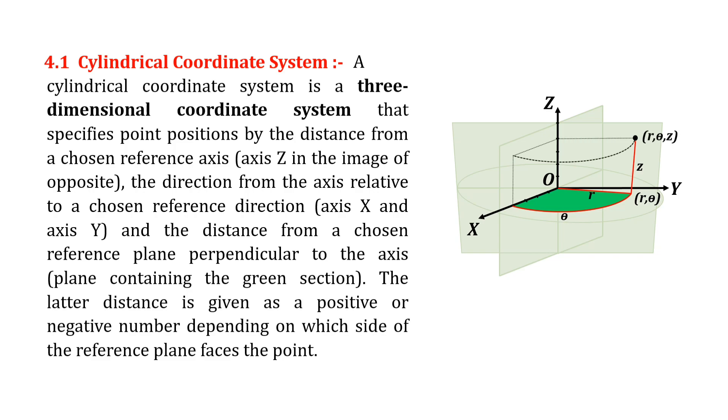The distance from the axis may be called the radial distance or radius, while the angular coordinate is sometimes referred to as the angular position or as the azimuth.